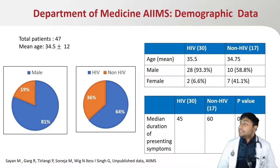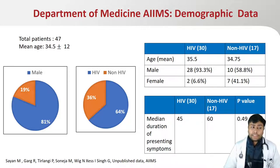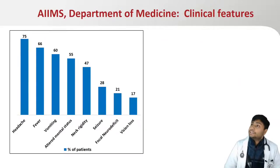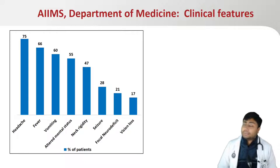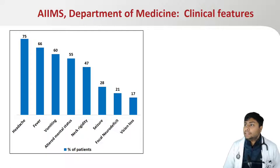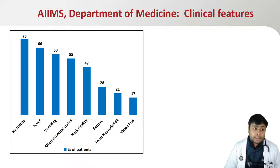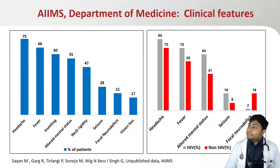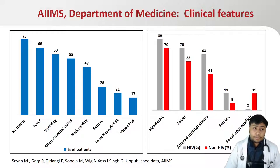The median duration of presenting symptoms was slightly higher in our non-HIV population due to the protracted course of the illness. Most patients, like other meningitis, presented with fever, headache, vomiting, and meningism signs. Notably, 17% of our cryptococcal meningitis patients had vision loss. Headache, fever, and meningism features were slightly more prevalent in the HIV-positive group.